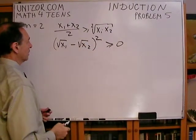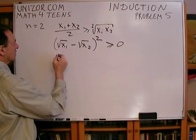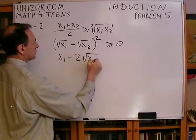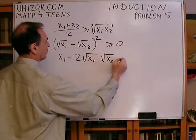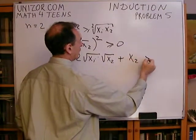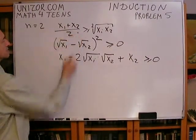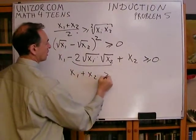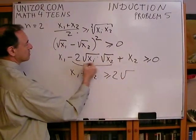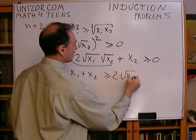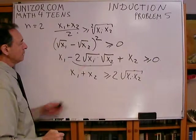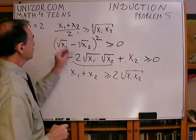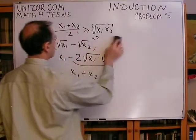If you take the obvious inequality (√x1 − √x2)² ≥ 0 and expand it, you get x1 − 2√(x1·x2) + x2 ≥ 0, which gives us x1 + x2 ≥ 2√(x1·x2). This goes to the right, so we have x1 + x2 greater than 2 times the square root of their product, which is exactly the square root of x1·x2. So for n equal to 2, it's a very straightforward check.